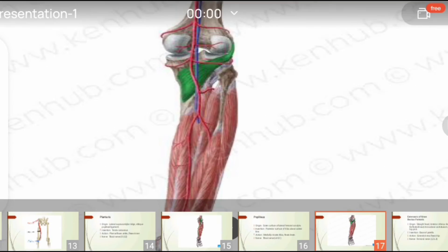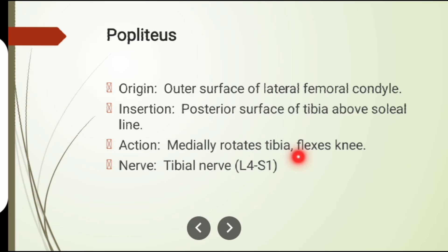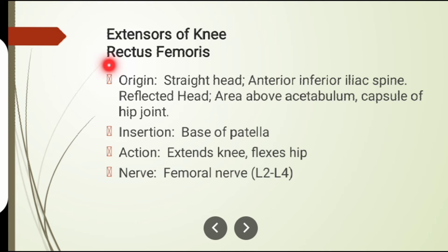Popliteus muscle: its insertion is on the soleal line. Action: knee flexion and medial rotation of the tibia. Nerve supply: tibial nerve. That concludes the first part of the video discussing the flexors of the knee. Now let's start the second part, discussing the muscles involved in knee extension.